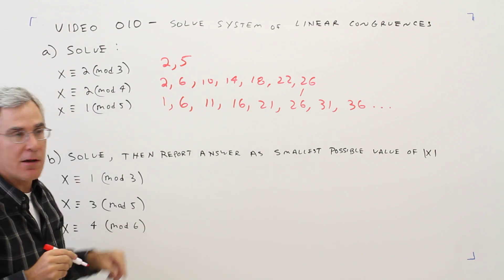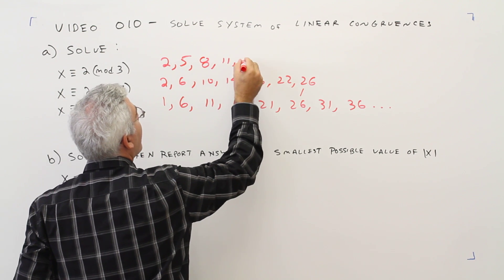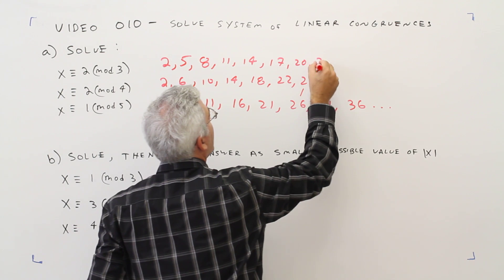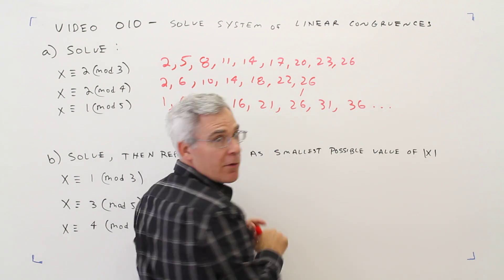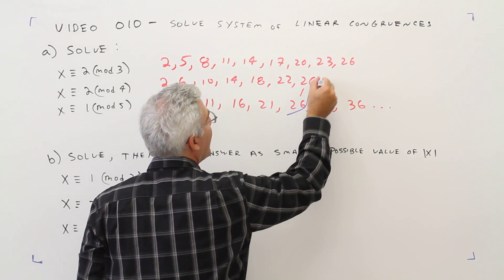Let's see if I can get a 26 up here. Adding 3s: 8, 11, 14, 17, 20, 23, 26. Very exciting. We have a match.